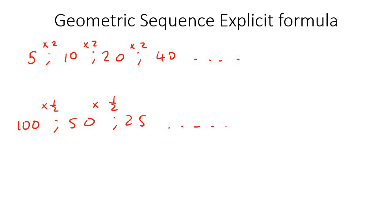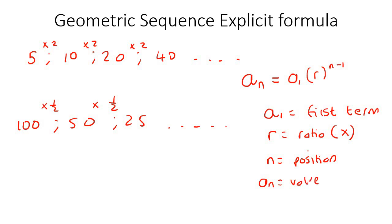Okay, so geometric is when you multiply by the same amount. So the formula that you use for that goes like this. A1 is your first term. R is the ratio. That's the number that you're multiplying with each time. N is the position. Remember, I showed you that with arithmetic. And then a_n is the value.